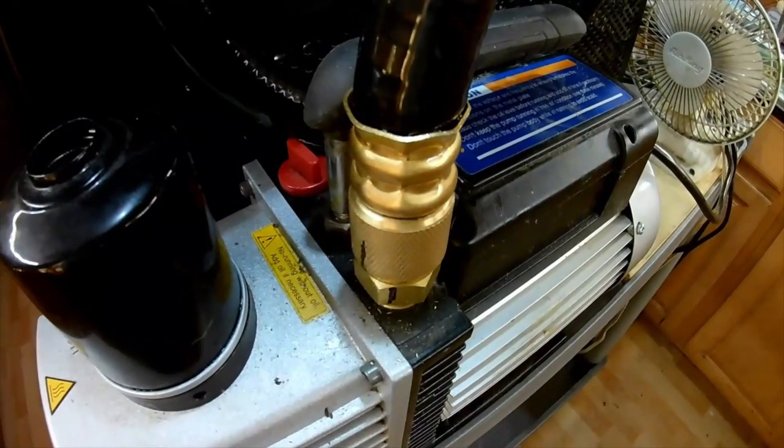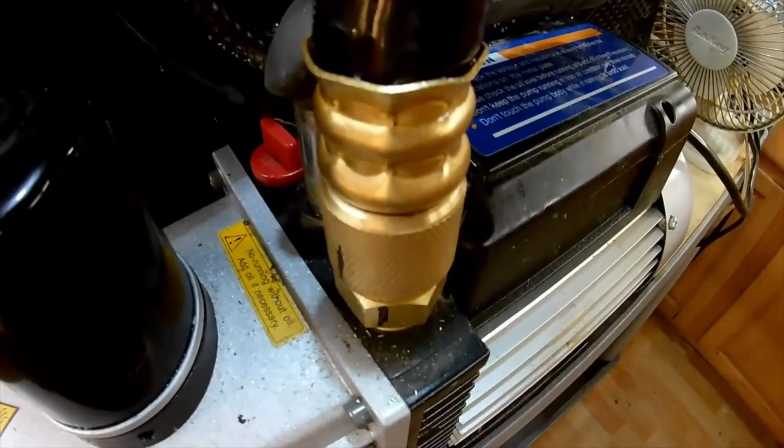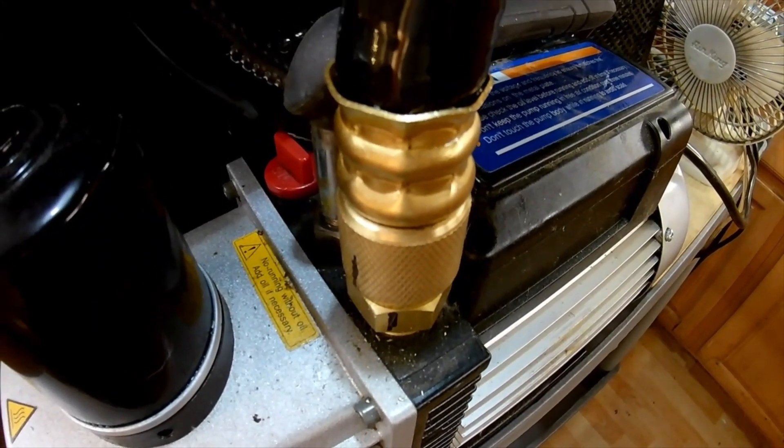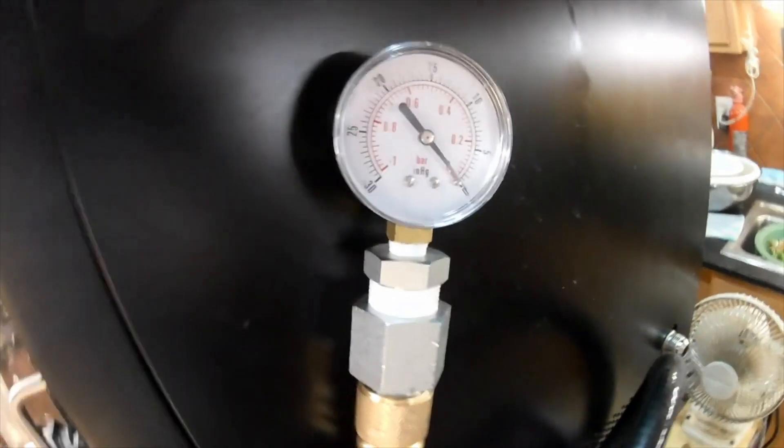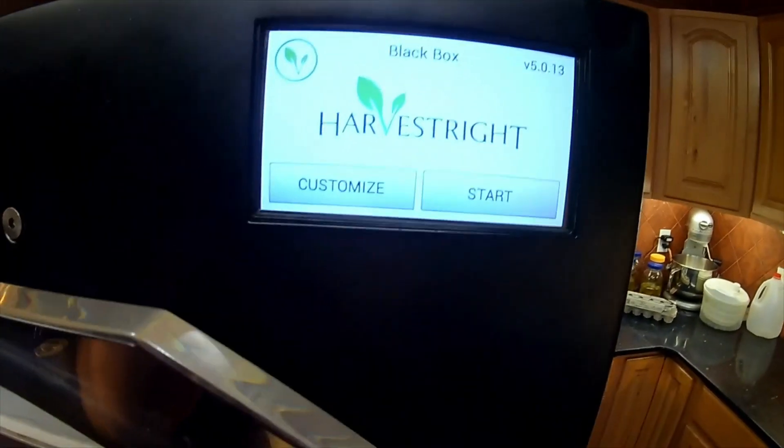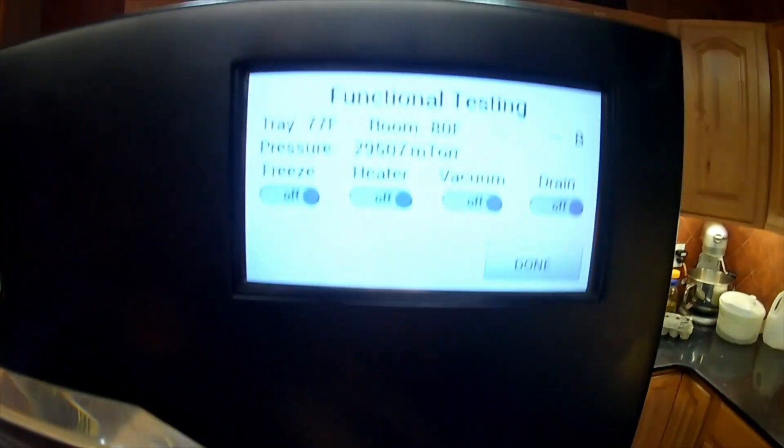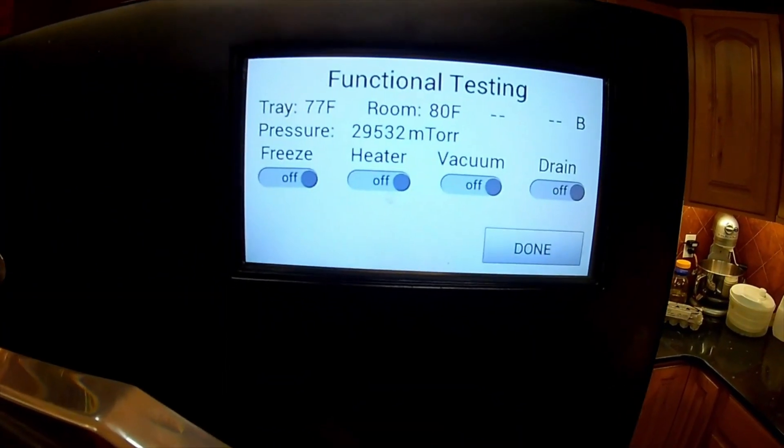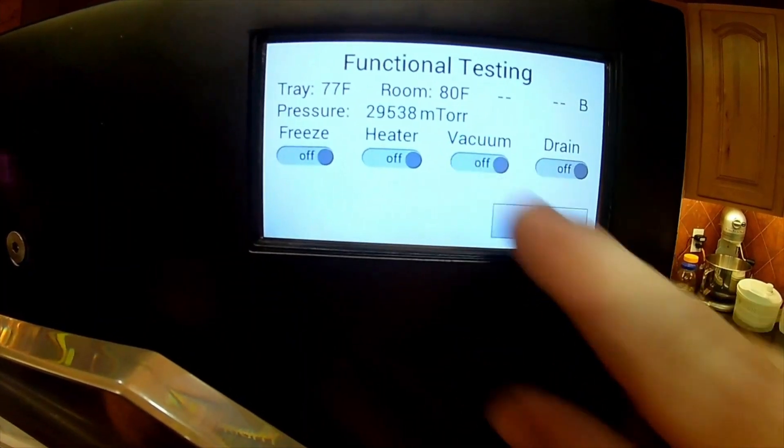I went ahead and tightened the fitting onto my vacuum pump, and I've attached my gauge to the other end. This is the end that normally goes into the freeze dryer. And we're going to come over here to the Harvest Right screen. We're going to press the leaf, and this will give us all our different function tests. So we want to go ahead and hit Vacuum.